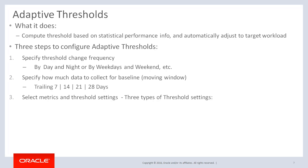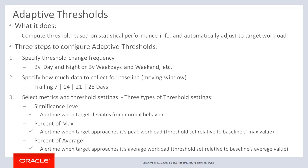There are three types of threshold settings within adaptive thresholds. The first option is significance level, which can be used when you want to detect abnormal behaviors in your metric performance. The other options are percentage of max and percentage of average. These options can be used when you want an alert when a target workload is approaching or exceeding its peak or average workload. We will see more details of each option in the next few slides.